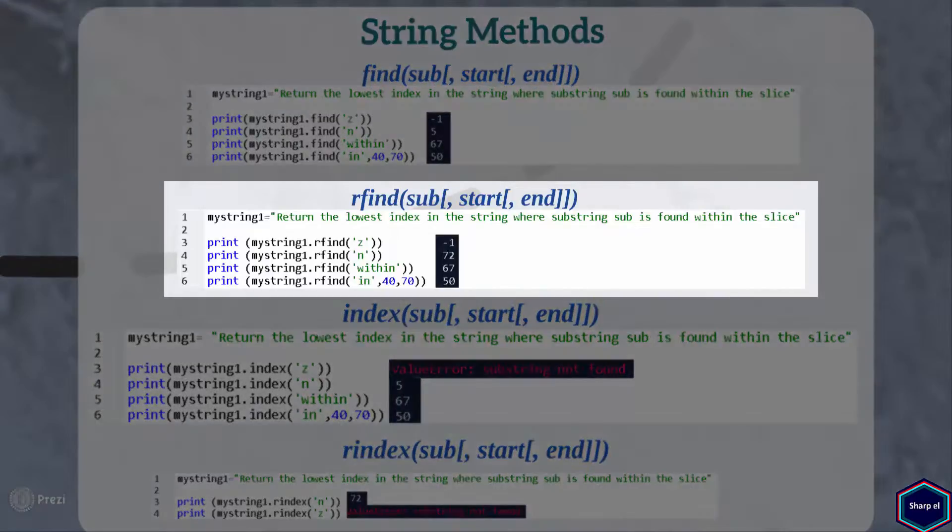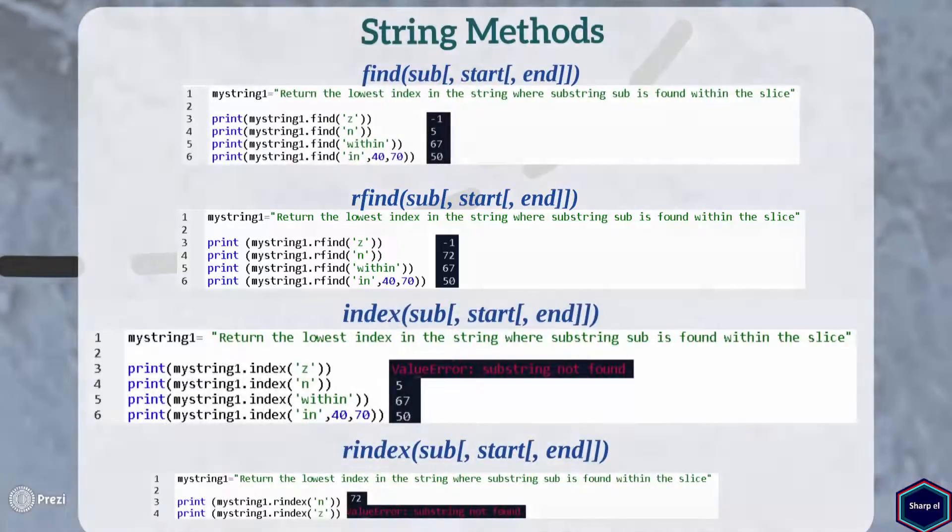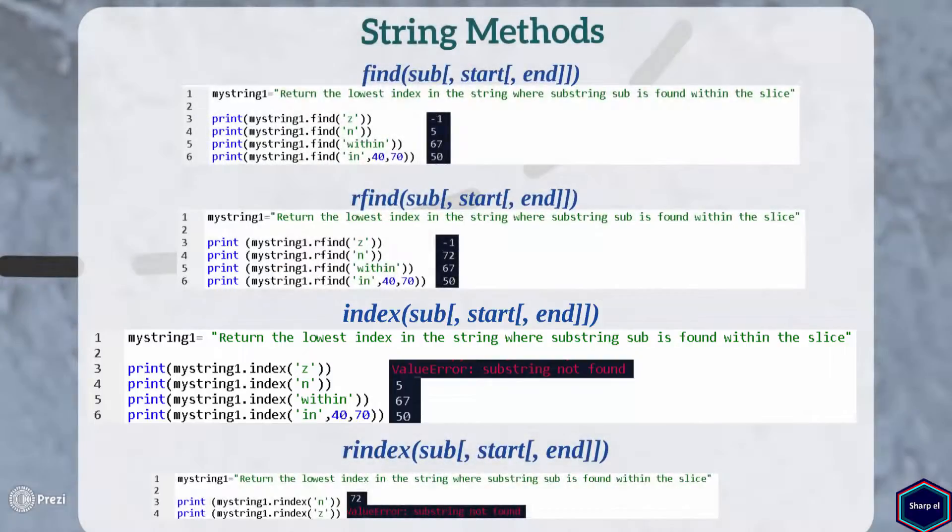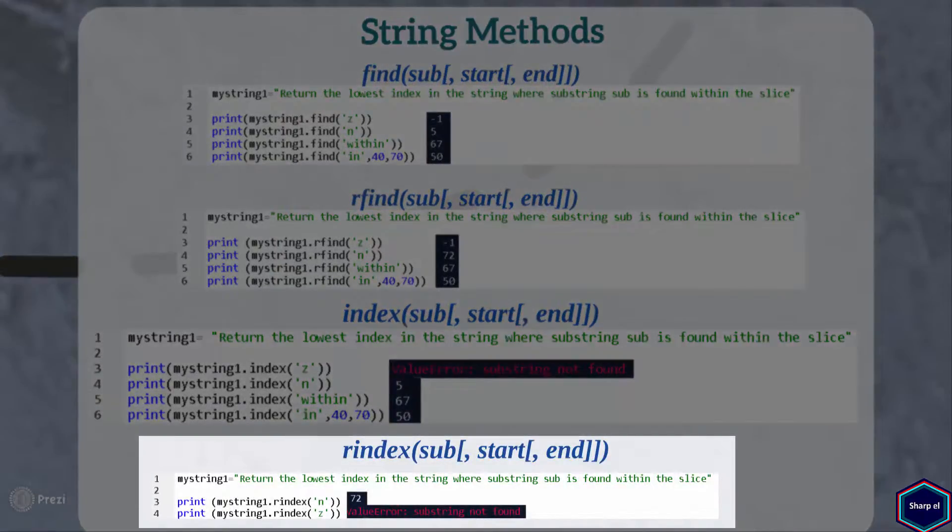Rfind method is very similar to find method, but it searches from right to left. The index method is very similar to find method, but unlike find method, which returns minus 1 when the substring is not found within the string, index method raises the value error exception. The rindex method is like rfind method, but it raises value error exception if the substring is not found within the string.